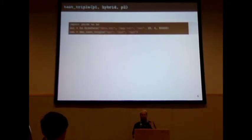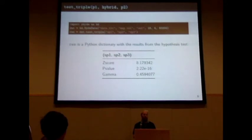It takes three lines of code in Python to do any analysis: import the module, read in the data, and do the hypothesis test. What gets returned is a Python dictionary with the test statistic, the p-value, and the estimated gamma—how much introgression is coming from the second parent.